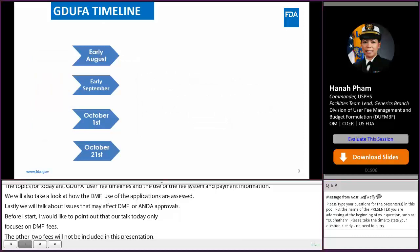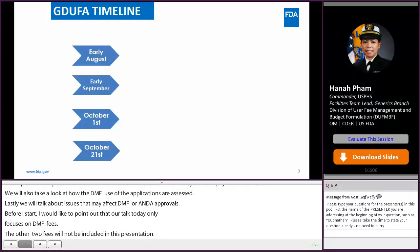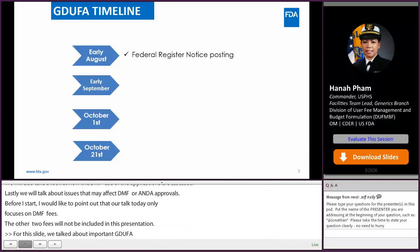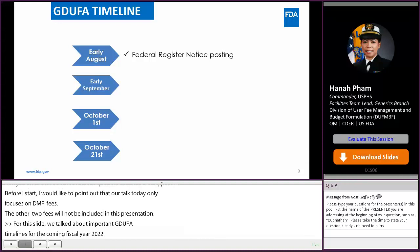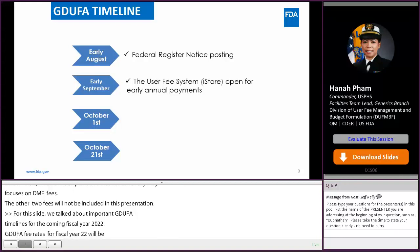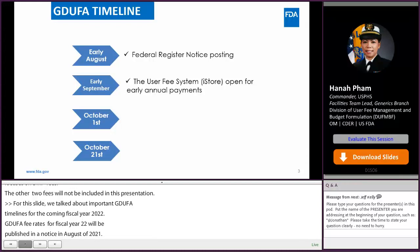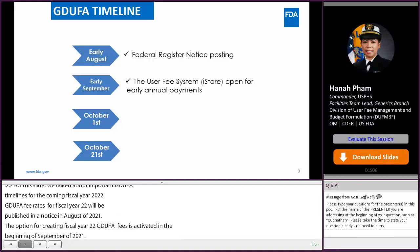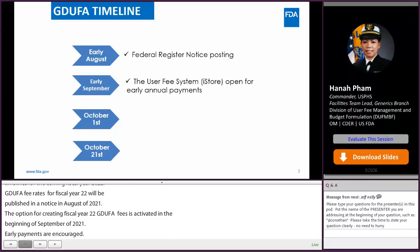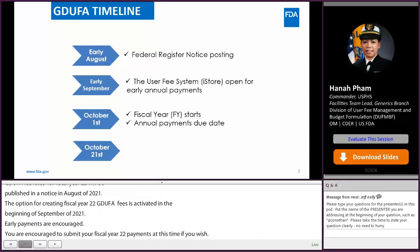For this slide, we've talked about the important GDUFA timeline for fiscal year 2022. GDUFA fee rates for fiscal year 2022 will be published in a Federal Register notice in August of 2021. The option for creating fiscal year 2022 cover sheets in the UCP system is activated at the beginning of September 2021. Early facility payments are encouraged — you may choose to submit your fiscal year 2022 facility payments at this time. However, fiscal year 2022 facility fees are not due until October 1st, 2021, and there is also a 20-day grace period for facility payments.